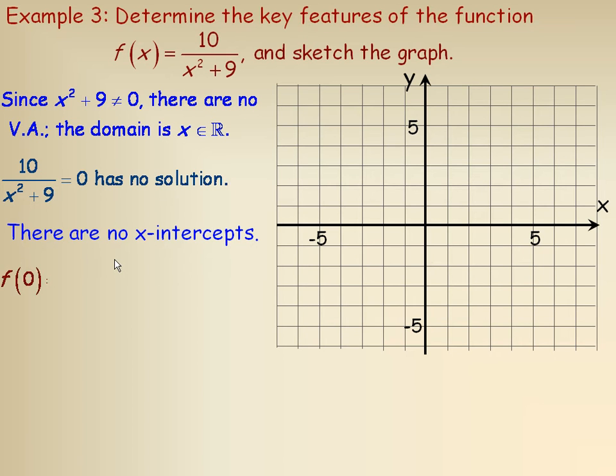There is a y-intercept though, because if we put zero in place of x here and here, 10 over 0 squared plus 9 is actually just 10 ninths, and so just above 1, 10 ninths is 1 and 1 ninth, just above 1, there's a y-intercept, so that's where it goes to the y-axis.